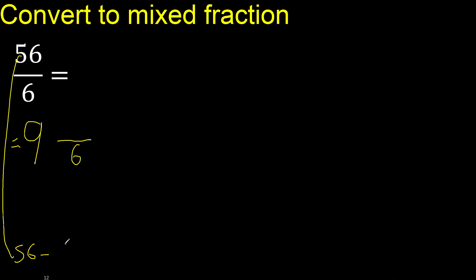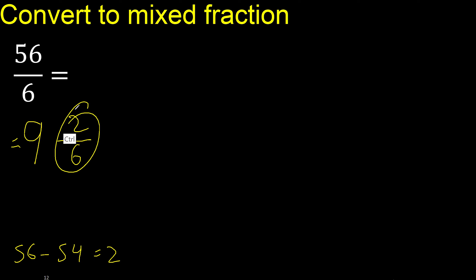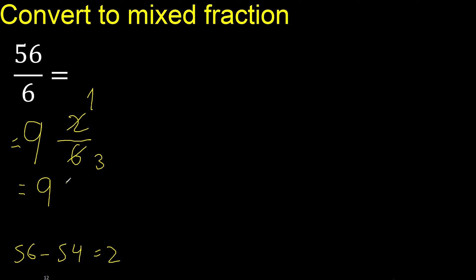56 minus 54 is 2. The 2 is here. This can be simplified because it can be divided by the same number — it can be divided by 2. 2 divided by 2 is 1, and 6 divided by 2 is 3. Finish.